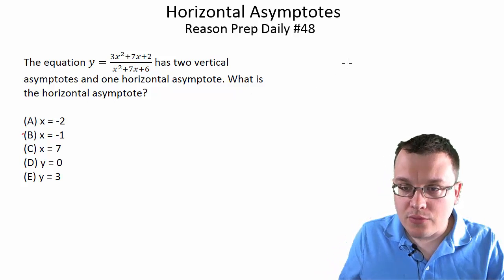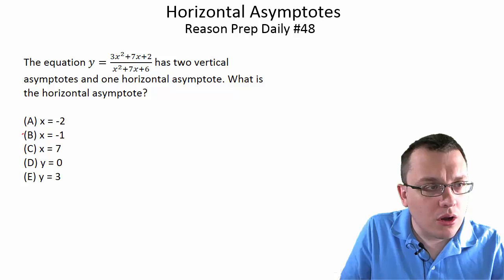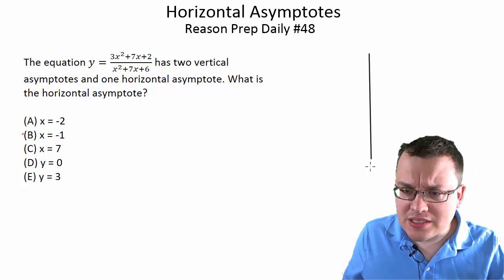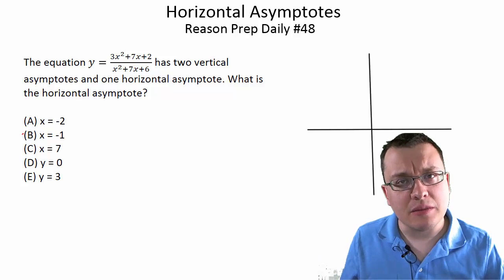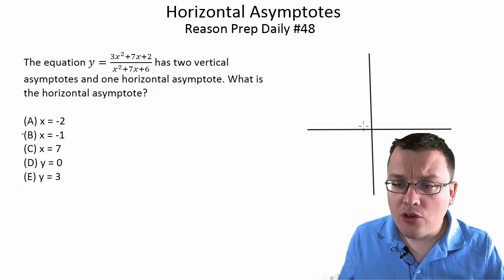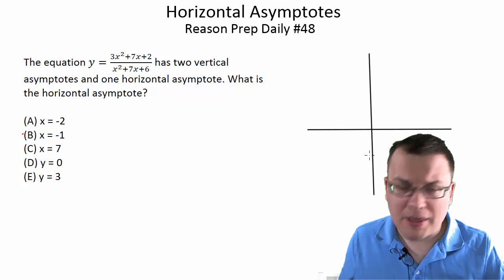If you recall from your graphs, a horizontal asymptote is essentially what happens to the equation or the function as x gets really, really big or as x gets really small. So for example, and by small I mean really negative.